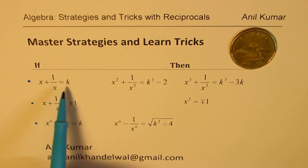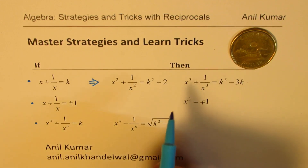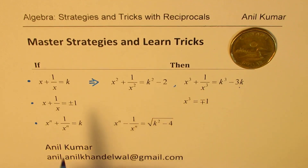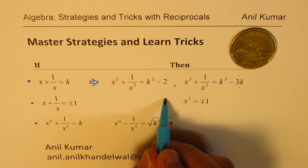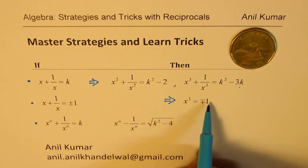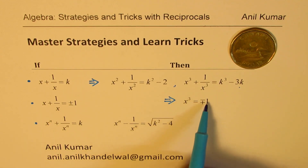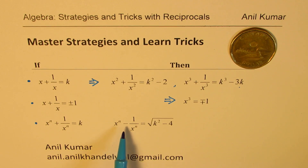If you are given x plus 1 over x equals to k, then x squared plus 1 over x squared is k squared minus 2, and x cubed plus 1 over x cubed is k cubed minus 3k. Now, if k is equal to plus or minus 1, it is a very important result that x cubed will be minus or plus 1 respectively. There is also a formula which converts plus to minus: if x to the power of n plus 1 over x to the power of n equals to k, it can be written as x to the power of n minus 1 over x to the power of n equals to the square root of k squared minus 4.